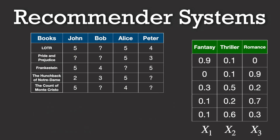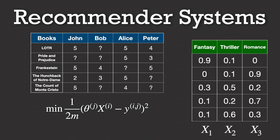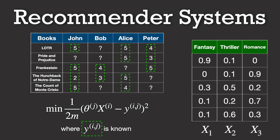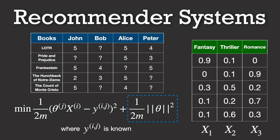To train our model and figure out the best parameters for each user, we set up an optimization problem. Essentially, we want our predictions to be as close as possible to the ratings we already have in our user-book matrix, and we do this by minimizing a loss function — which in this case is typically the sum of squared differences between the actual ratings and our predicted ratings. More often than not, we also include regularization terms to ensure that our model doesn't overfit the data. The core idea is to adjust the user's parameters so that our predictions match the observed ratings as closely as possible.